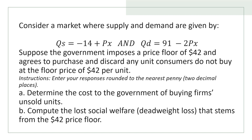This is our question. Consider a market where supply and demand functions are given below. The supply function: quantity supplied QS equals minus 14 plus PX, and quantity demanded equals 91 minus 2 into price of good X. Suppose the government imposes a price floor at $42 and agrees to purchase and discard any units consumers do not buy at the floor price of $42 per unit.